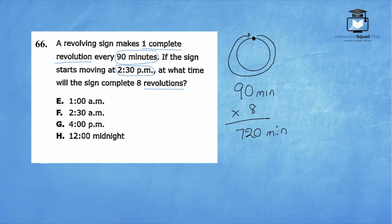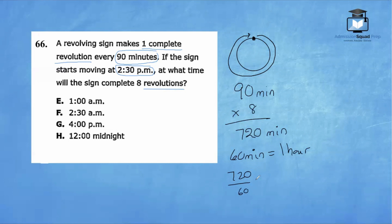We need to convert minutes to hours. Since 60 minutes equals one hour, we divide 720 by 60, which gives us 12 hours. It takes 12 hours for the sign to complete eight revolutions. So what is 12 hours after 2:30 p.m.? That takes us to 2:30 a.m. So F is the correct answer.